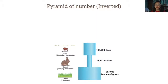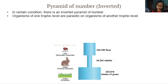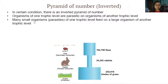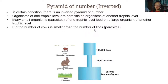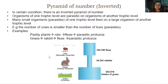We can also have a fully inverted pyramid of numbers. Under certain conditions, organisms of one trophic level are parasitic on organisms of another trophic level. For example, if the secondary consumer is a parasite like fleas, you could have an inverted pyramid of numbers — many small parasites of one trophic level feed on a larger organism of another. For instance: plants → rats → fleas → parasitic protozoa, or grass → rabbit → fleas → parasitic protozoa.